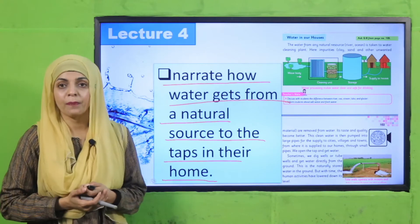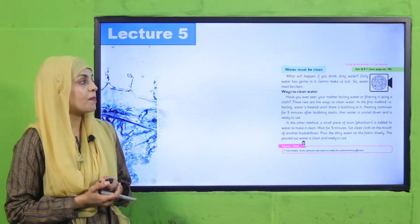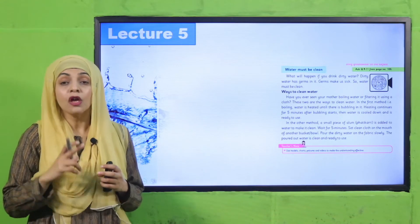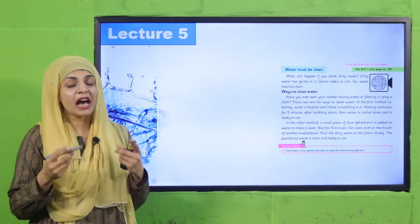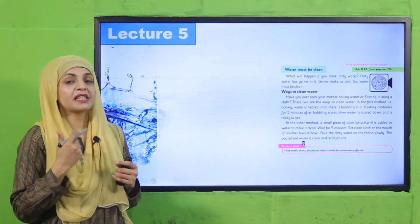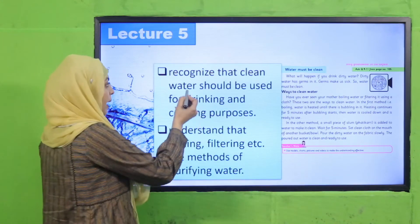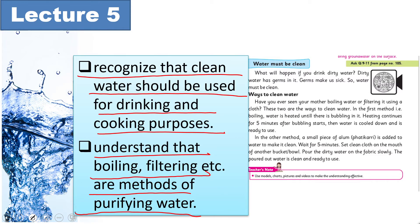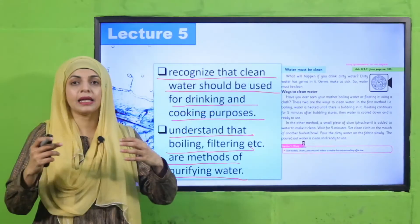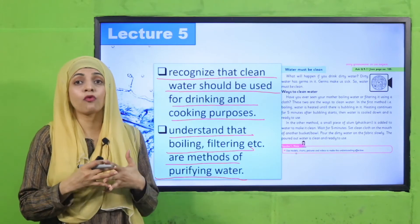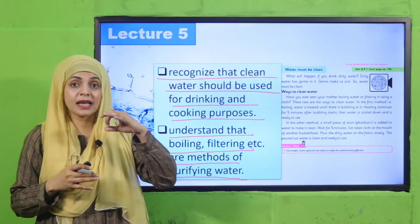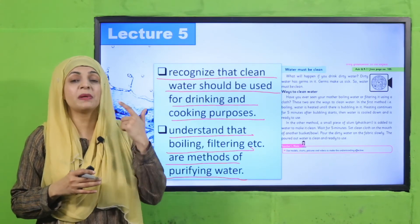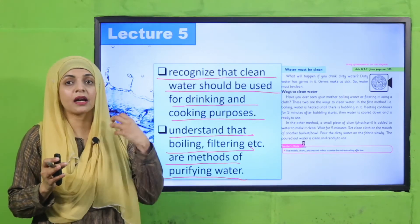Then in Lecture Number 5: Water Must Be Clean — jo paani aapke gharon mein aata hai woh saaf hona chahiye. Ab usko saaf karne ke liye kya kya processes hote hain — this will be discussed in Lecture Number 5. Students will be able to recognize that clean water should be used for drinking and cooking, and understand that boiling, filtering, etc. are methods of purifying water. Jo paani aap nahane ke liye, peene ke liye, khana banane ke liye istamal karte hain — woh saaf hona chahiye. Ab usko kaise saaf kiya jata hai — there are different methods.